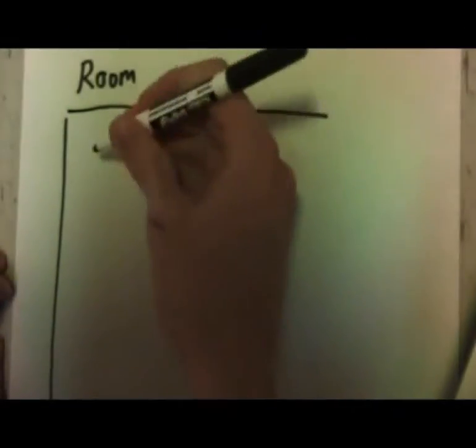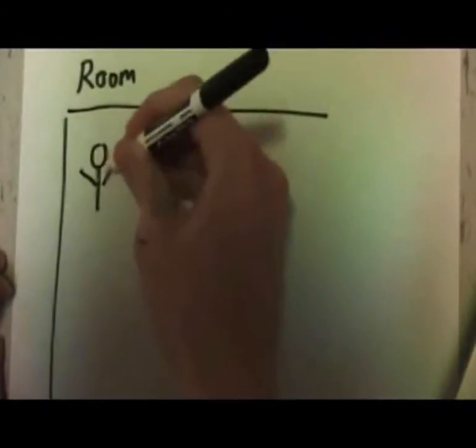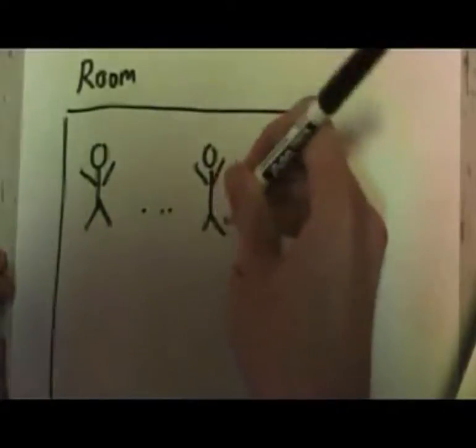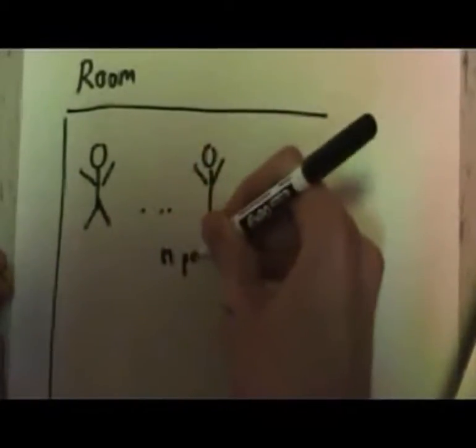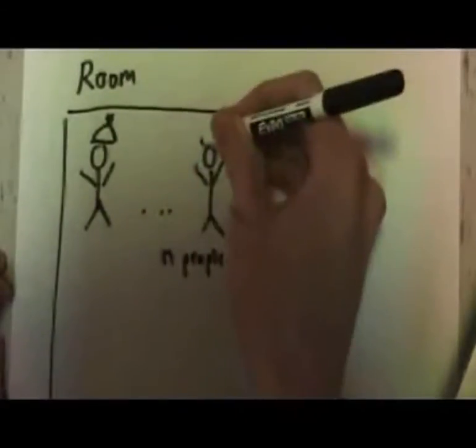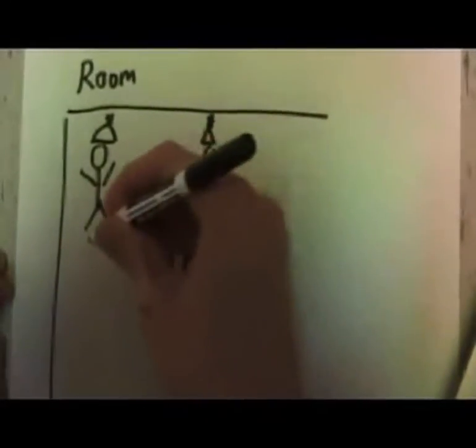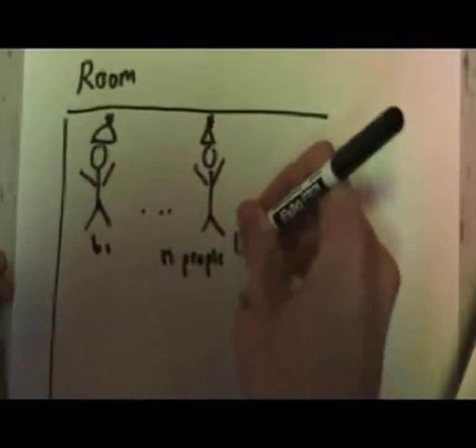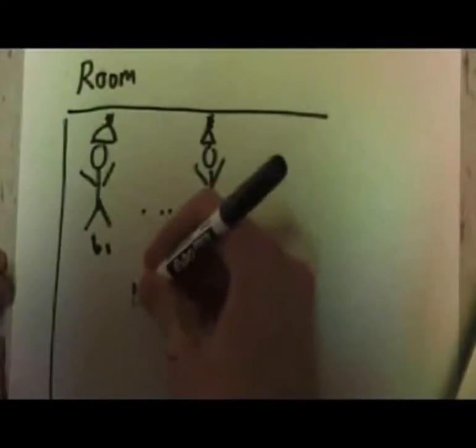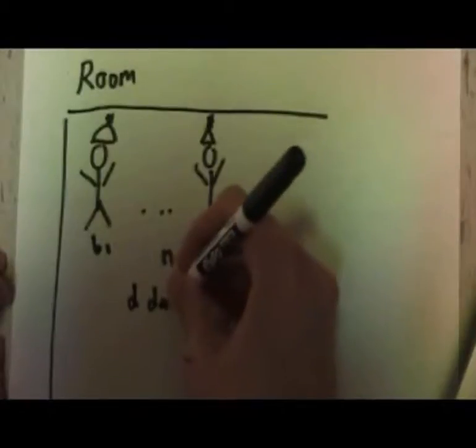Imagine we have an initially empty room. People start walking into the room one at a time until we have n people in the room. Now every person in the room also has a birthday. Call these birthdays B1 through Bn. These birthdays are distributed throughout d days in the year.